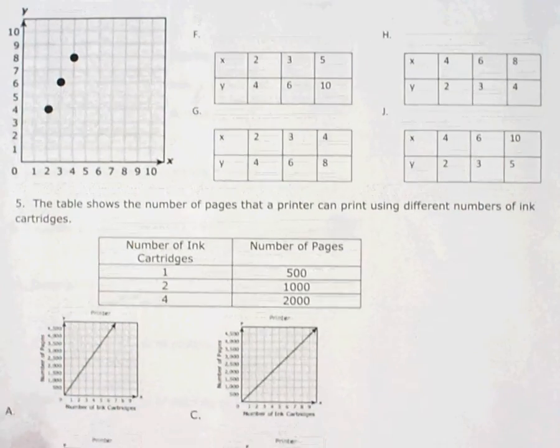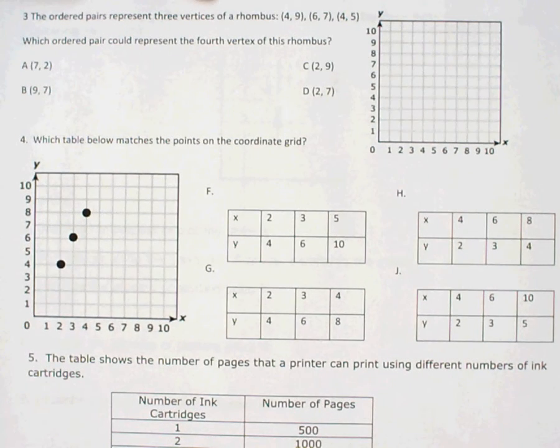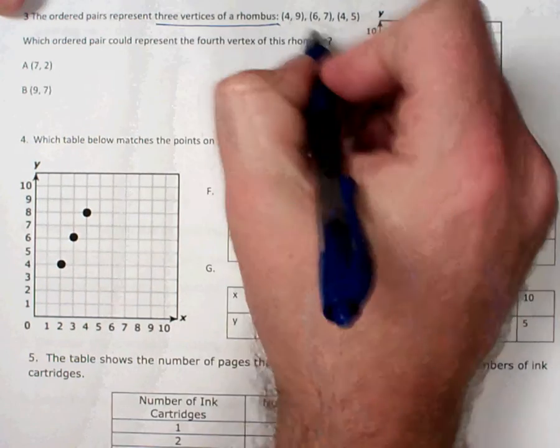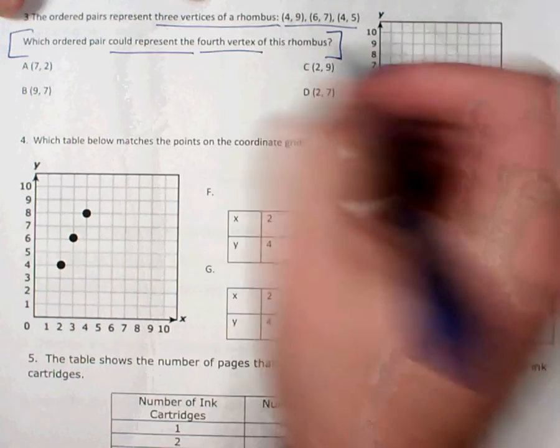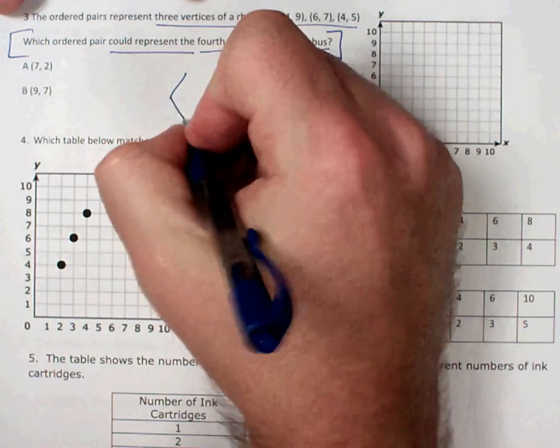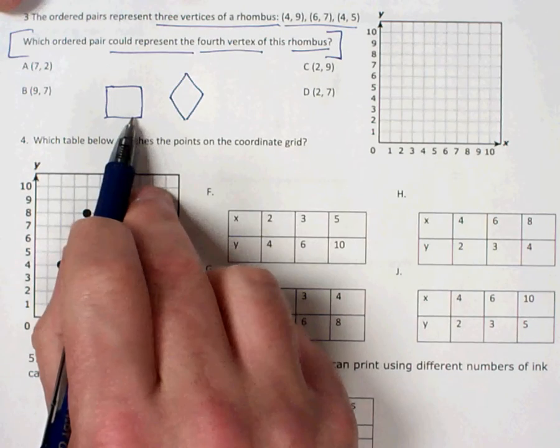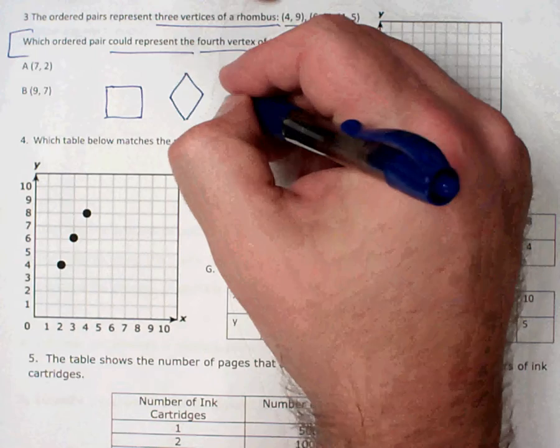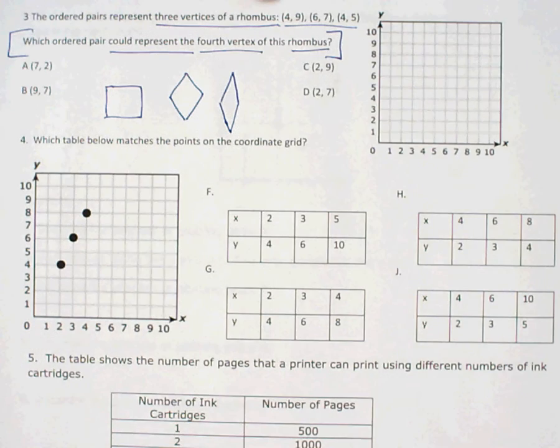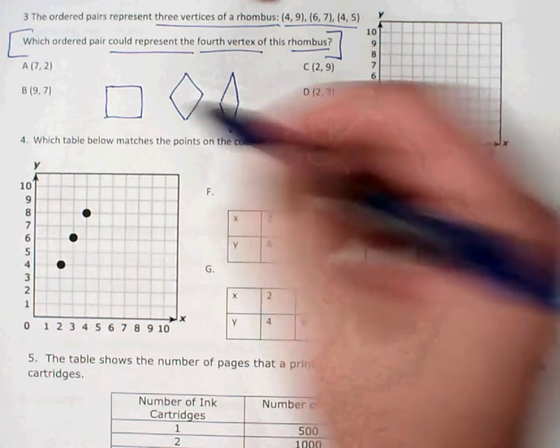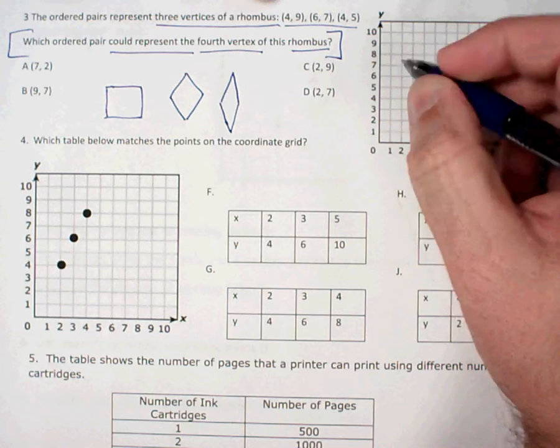Number 3. Number 3 is an interesting question because you have to know what a rhombus is to answer this question. So the ordered pairs represent three vertices of a rhombus. And then we're given those three ordered pairs. Which ordered pair could represent the fourth vertex of this rhombus? You have to know that a rhombus is a four-sided shape with four equal sides. And it usually will look either like a square or it'll look something like this. And it can be skinnier or it can be fatter or wider. But the four sides have to be the same length. And so you get kind of this diamond shape. So let's plot these first three points and see if we can kind of start to see the shape of it.